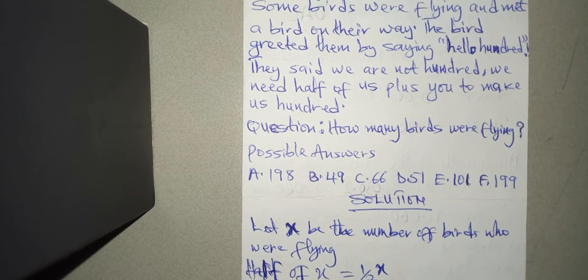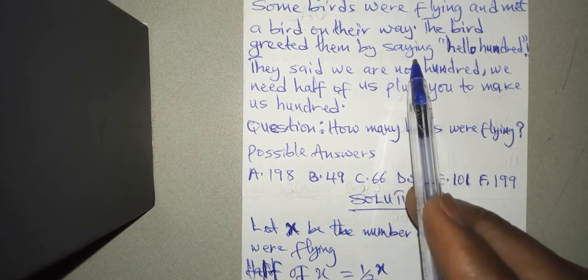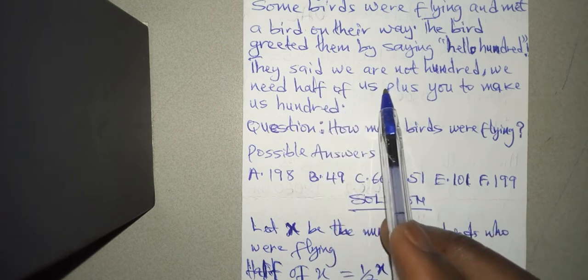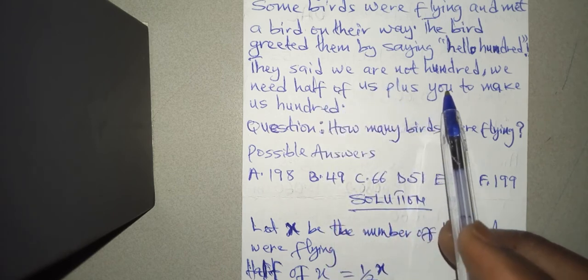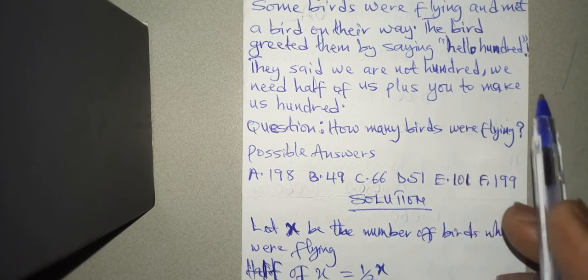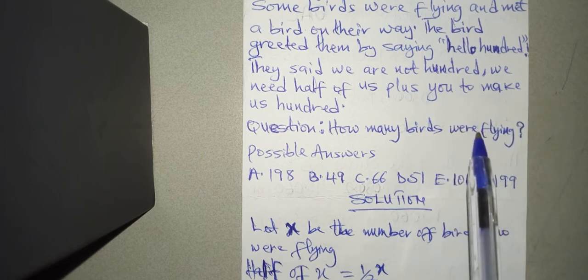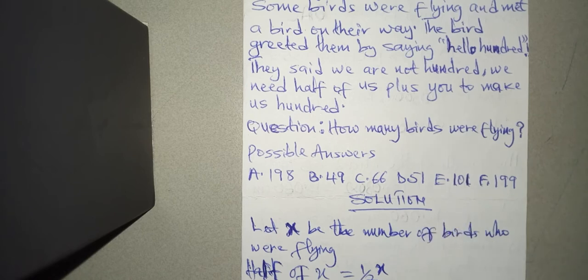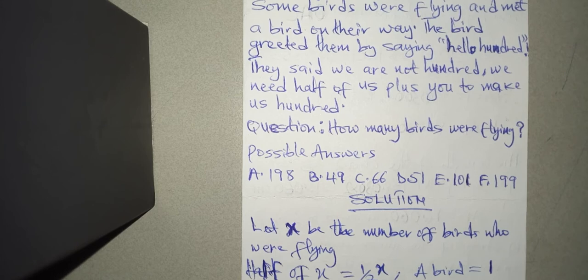Now let's continue. The question goes on to say that plus you, and you here is referring to that single bird who greeted them. All right, and the definite value of that single bird is 1. So let me say a bird equals 1, that is the definite value of the bird that did the greeting.